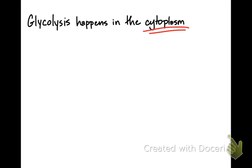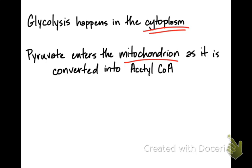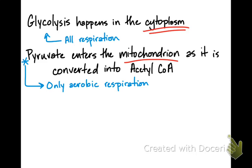So now we've broken down glucose in the cytoplasm. We're now going to enter the mitochondrion, because that's where pyruvate is converted into acetyl-CoA. All respiration, both aerobic and anaerobic, goes through glycolysis. But from here on out, we're only talking about aerobic respiration for the rest of this screencast.